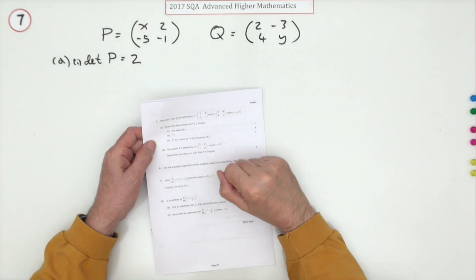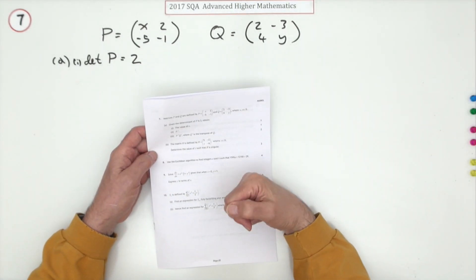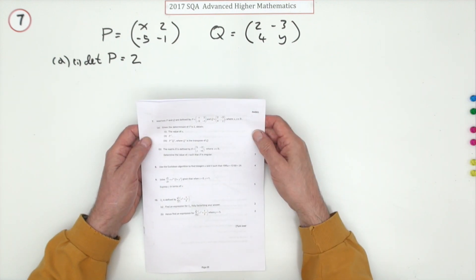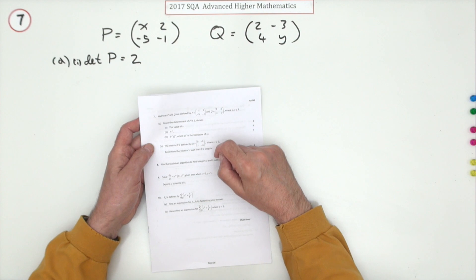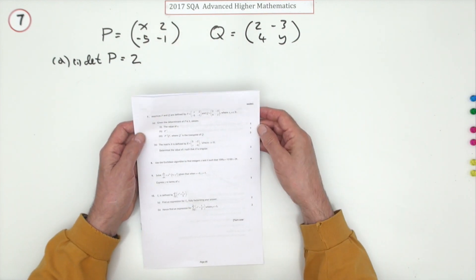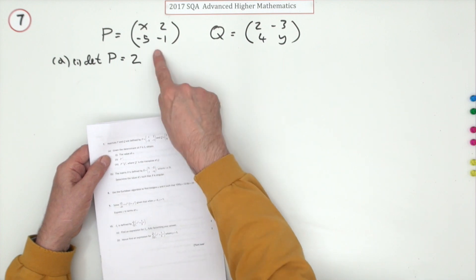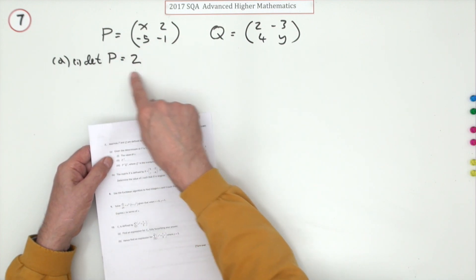Number seven, from the 2017 Advanced Higher Maths matrices questions, six marks, but they're all in bits and pieces, so it shouldn't be too hard. They give two matrices P and Q, both two by two matrices. Part A for one mark: for the first part, in matrix P, the determinant of P is two.